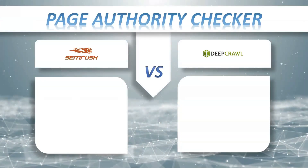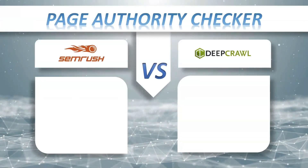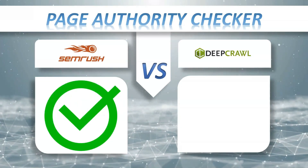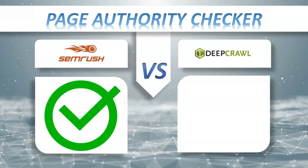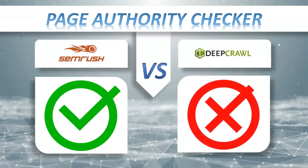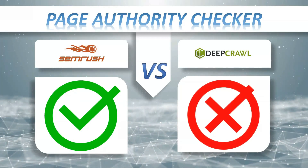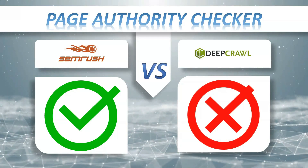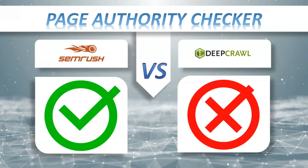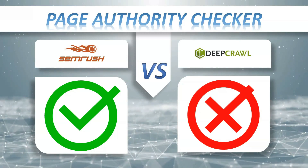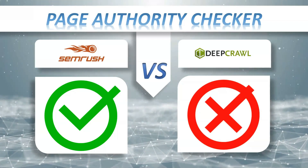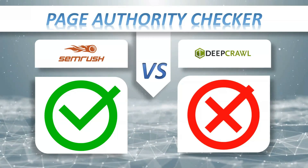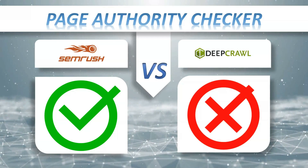Page authority: SEMrush has it, DeepCrawl doesn't have it. Page authority is a metric developed by professionals to predict the ability for a specific page to rank in search engines. Page authority uses a 0 to 100 logarithmic scale. A high page authority score means your page has the potential to rank well in search engine results.